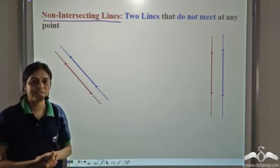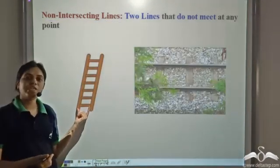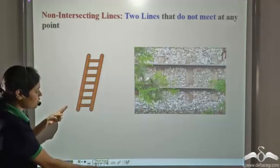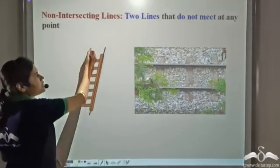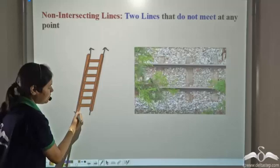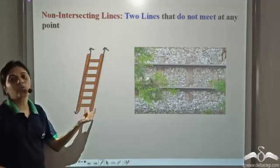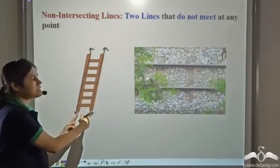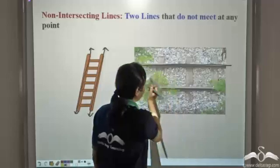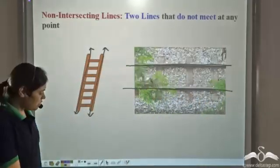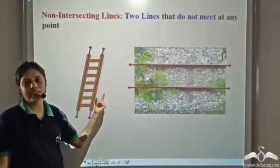Can you think of some examples of non-intersecting lines from your daily life? Have you seen a ladder? The two sides of the ladder — if we consider these two sides as two lines — are two non-intersecting lines; they will never meet, no matter how long or small the ladder is. Railway tracks are another example: if we consider them as two lines, these two lines never meet or intersect each other, so these are non-intersecting lines.